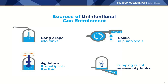Sources of unintentional gas entrainment include: long drops into tanks — the farther the liquid falls, the more air is entrained, and since tanks aren't see-through it's hard to know the drop distance; leaks in pump seals, which introduce entrained gas into the process; agitators that produce a vortex, entraining air — the vortex size and entrained gas increase as fluid level decreases; and pumping out of a near-empty tank, which sucks air into the process.